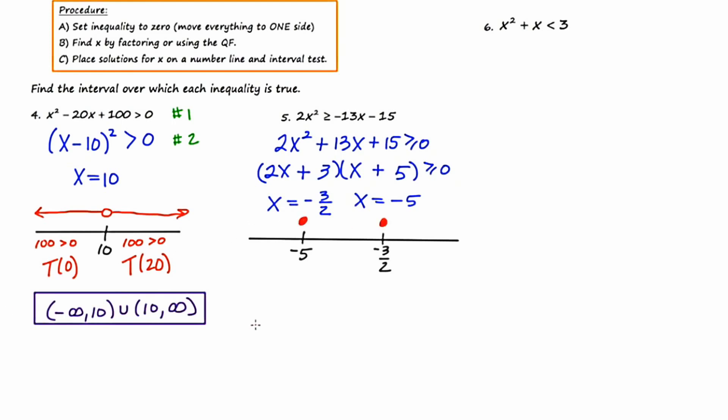Now I need to pick test points. So I'm going to pick over to the left, negative 10. In the middle, I'll pick negative 3. And over to the right, I'll pick zero. I have three choices for inequalities to plug in for. The originally stated problem, which I'll call number 1, and then these two manipulated forms, which I'll call 2 and 3.